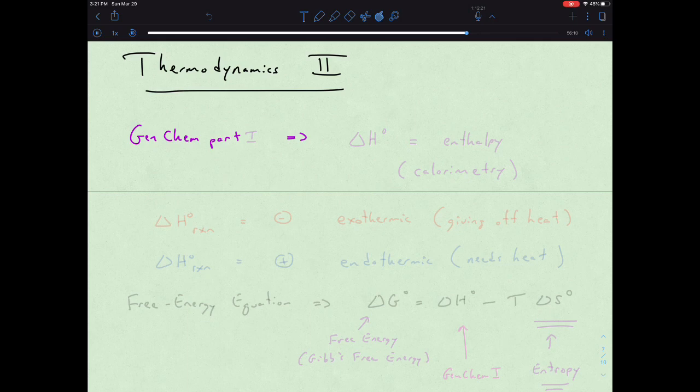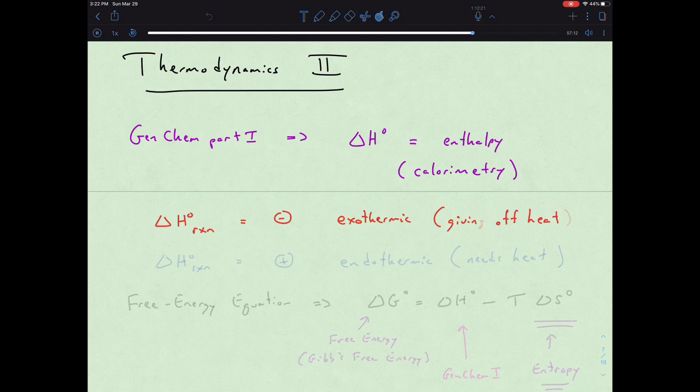With that general chemistry part one aspect, we had the notion of delta H or enthalpy. You guys might still have nightmares about calorimetry, but we did discuss at length the idea of enthalpy, delta H, how to measure it using calorimetry. And we had a couple of different relationships that your delta H for a process could be negative or exothermic, that would be giving off heat for a particular process.